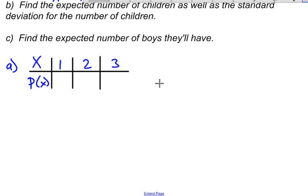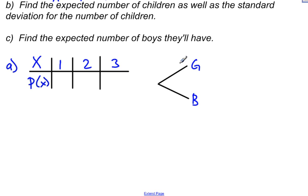The first branch is for their first child — they're either going to have a girl or a boy, and there's a 50-50 chance of either one. If they have a girl, they stop right there. That means the probability of having one child is 0.5.